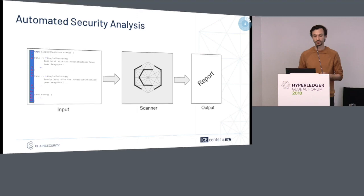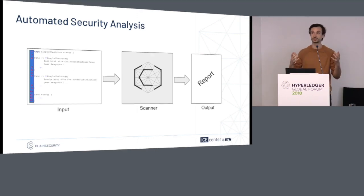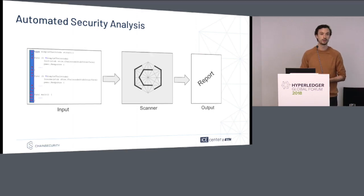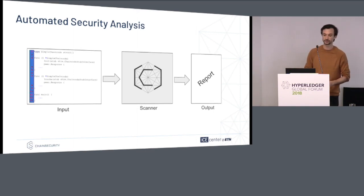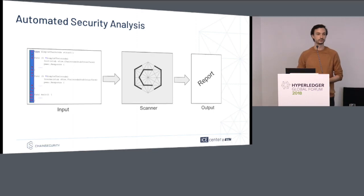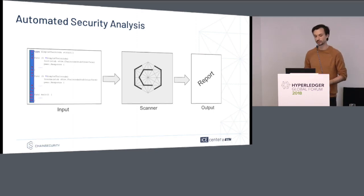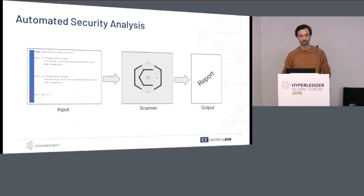So what does the analyzer actually do? As input it takes the source code implemented in Go, which is a smart contract for Hyperledger Fabric chain code. It takes this input, analyzes it, compiles it, and the output is going to be a report which will say on what line of the source code it might be vulnerable.